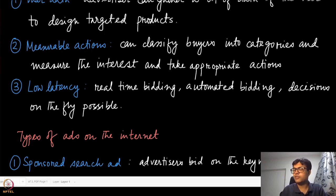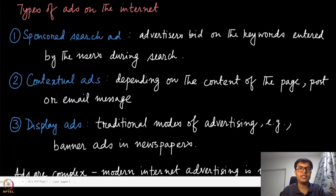What kind of types of ads are prevalent on the internet? The first type is sponsored search ads. Advertisers bid on the keywords that are entered by the users during search. If you are searching certain things on Google or Bing, there are advertisers who are actually bidding on those keywords and their ads are being shown up in the corresponding products that you are using.